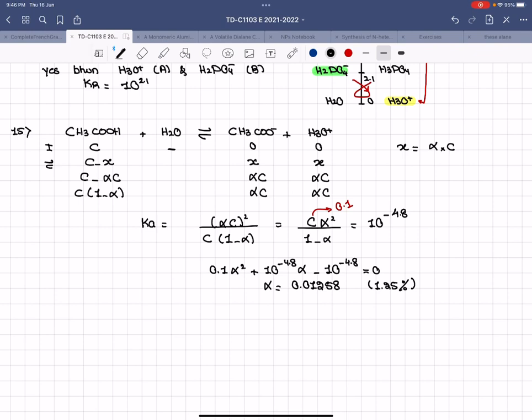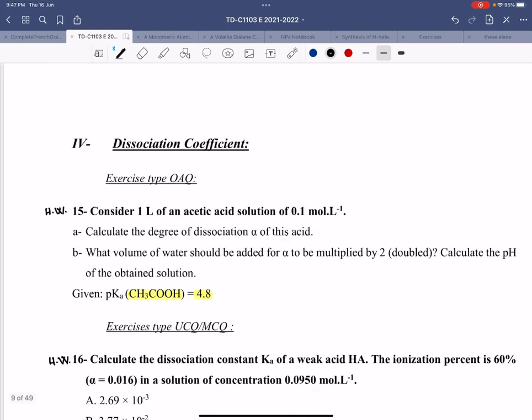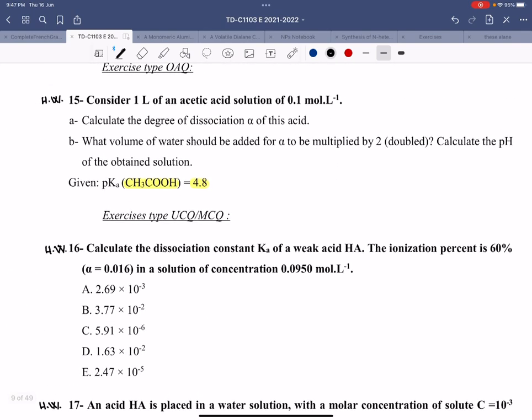So this is part A, the alpha of this acid. Part B: what volume of water should be added for alpha to be multiplied by 2, doubled?